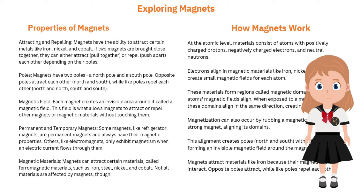Permanent and temporary magnets: some magnets, like refrigerator magnets, are permanent and always have magnetic properties. Others, like electromagnets, only exhibit magnetism when an electric current flows through them.